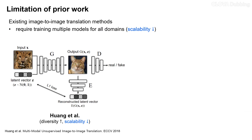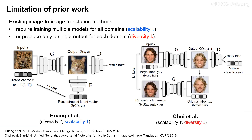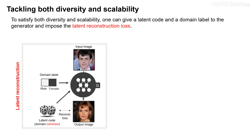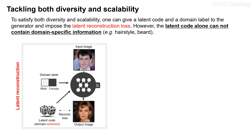Existing image-to-image translation methods require training multiple models or produce only a single output for each domain. To satisfy both diversity and scalability, one can give a latent code and a domain label to the generator and impose the latent reconstruction loss. However, in this setting, the latent code alone cannot contain domain-specific information.